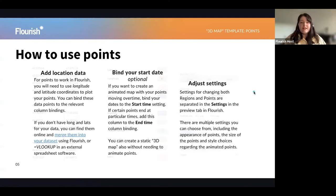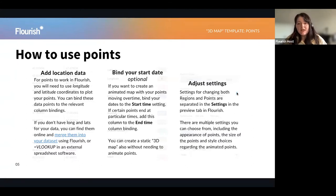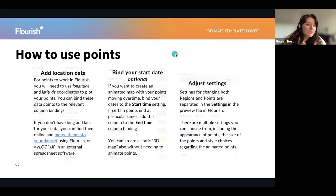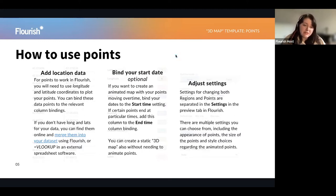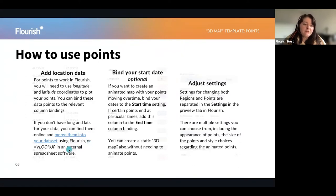Here's a quick overview before I go into the app on how to use points. Essentially, you add your location data. Unlike the projection map and regions where you would use GeoJSONs and geometry, points are plotted using longitude and latitude coordinates. You then bind these to the relevant column bindings. If you don't have longitude and latitudes for your data, you can find them online and easily merge them into your dataset using Flourish, or you can use VLOOKUP in an external spreadsheet software.